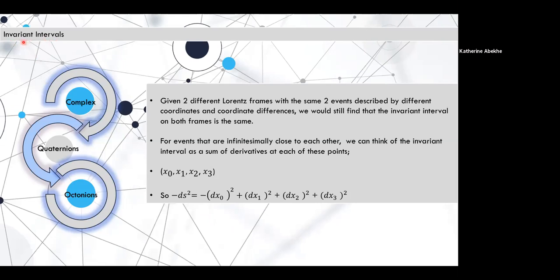So now we're going to describe something called an invariant interval. So basically we have two different Lorentz frames and we're representing the same two events in each frame. So each frame is going to have, let's say the first frame has coordinate x and the difference in x and the second frame has coordinate y and the difference in y. So clearly these are two different coordinates and two different coordinate differences, but they're going to have the same invariant interval, which we usually denote by ΔS² or dS² if we're talking about infinitesimally close events. And here we just show the formula for the invariant interval. The negative sign on the dx₀² just represents the fundamental difference between the time coordinate and the spatial coordinates.